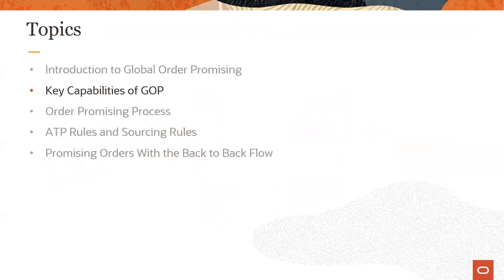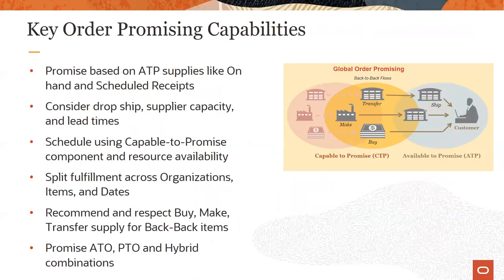Now let's look at some of the key capabilities of GOP. GOP has the ability to search the supply network of the enterprise very rapidly for the best supply sources which meet orders optimally. These supplies could either be on hand or scheduled receipts such as work orders, transfer orders, or purchase orders — collectively termed as available to promise or ATP supplies. The order promising solution also has the ability to promise dropship orders, taking into consideration supplier capacity as well as different lead times such as transit lead times or supply lead times.